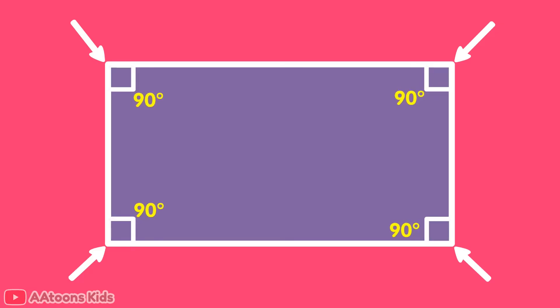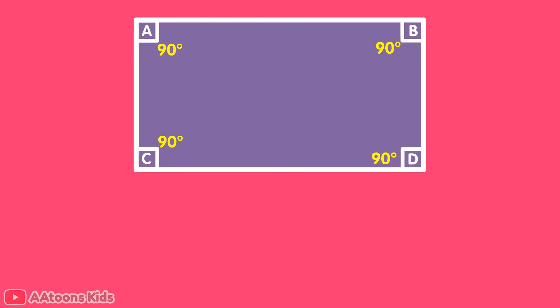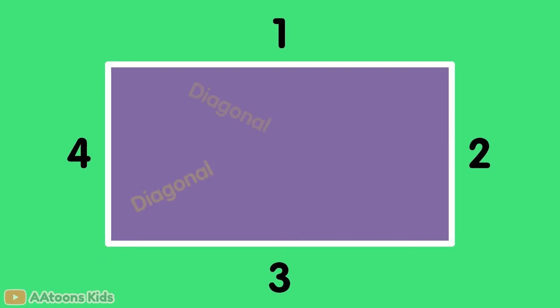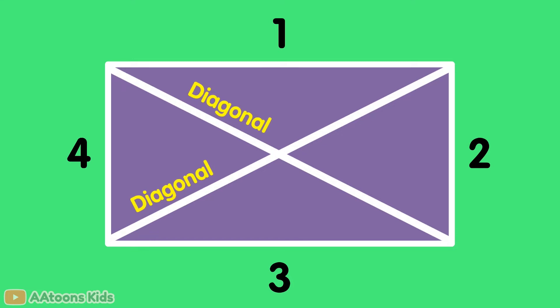A rectangle has four corners and four right angles, each measuring 90 degrees. The sum of internal angles is always 360 degrees. A rectangle also has two diagonals that are equal in length and bisect each other.